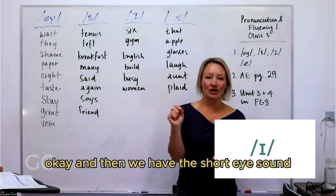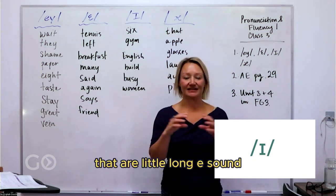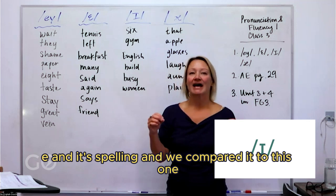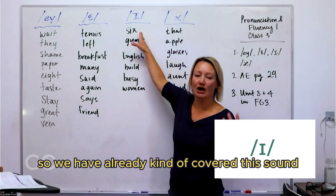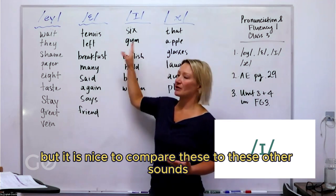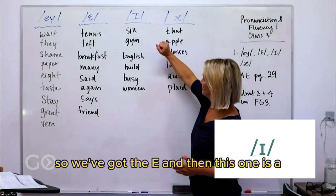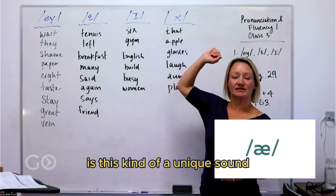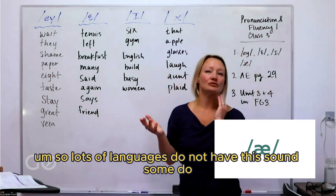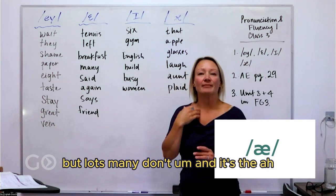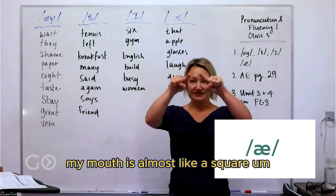Last week, we talked about the long I, or the long E sound, and its spelling, and we compared it to this one. So we've already kind of covered this sound, but it is nice to compare these to the other sounds. And then this one — the ah — is a unique sound. Lots of languages do not have this sound. Look at my mouth: it's almost like a square.